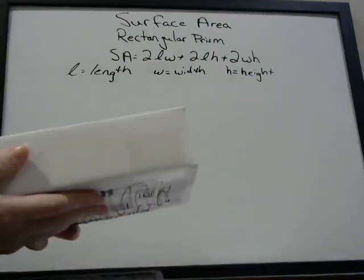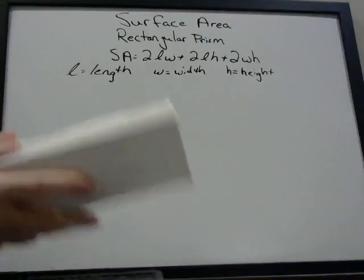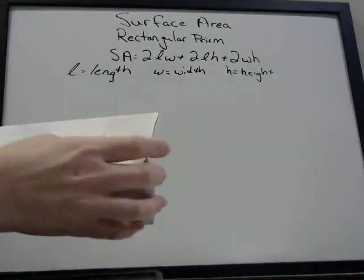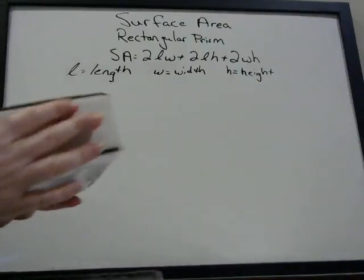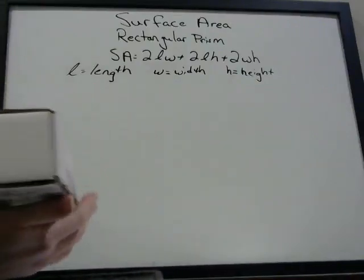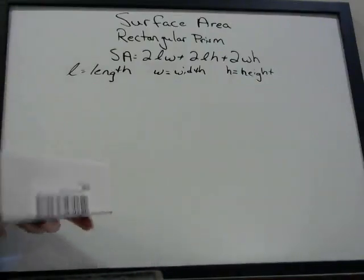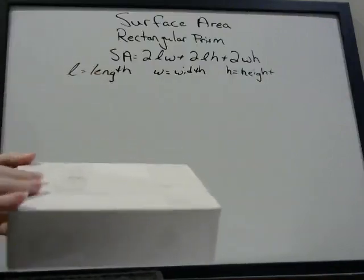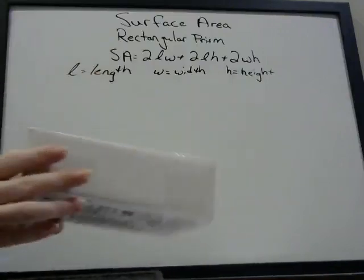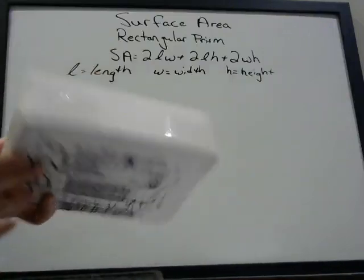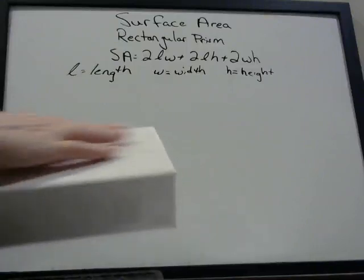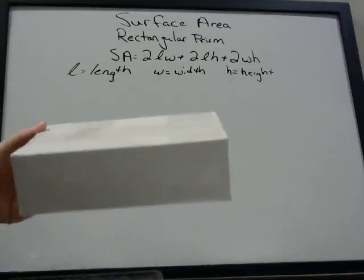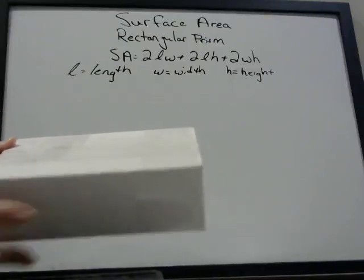Remember when we're talking about area, you can think of it as covering something or painting something. So if we wanted to paint this box, we would find the surface area of the whole box — the top, the bottom, each of the sides — and add them all together. That's the total surface area.